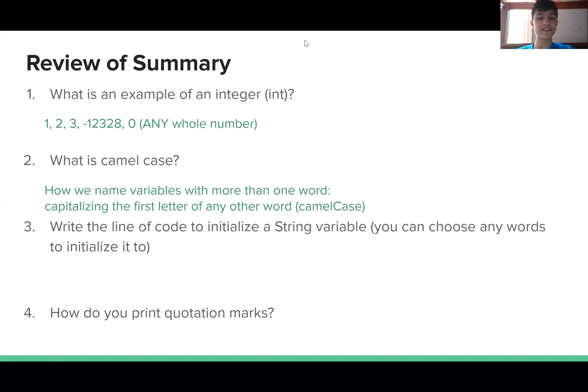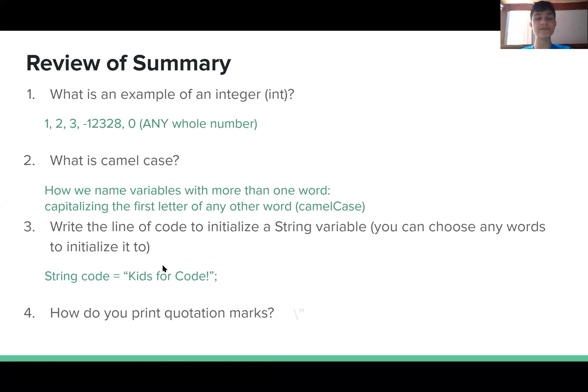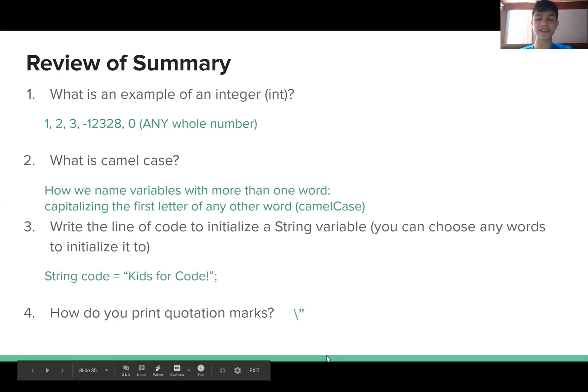Write the line of code to initialize a string variable. So we have our data type, in this case string, our variable name, in this case code, and our data value, in this case kids4Code. How do you print quotation marks? Use backslash quotation mark.